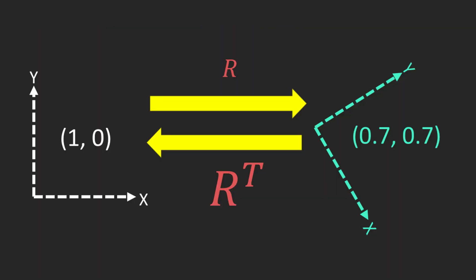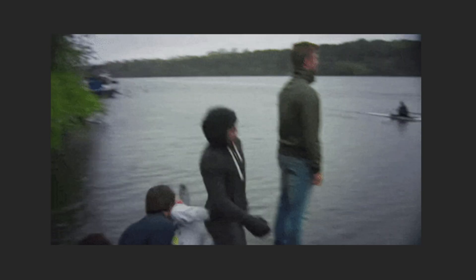Also, converting back to the other frame backward is so simple. Just take a transpose of the matrix and then multiply the vector. Your vector description will be seamlessly converted back to the previous coordinate system.